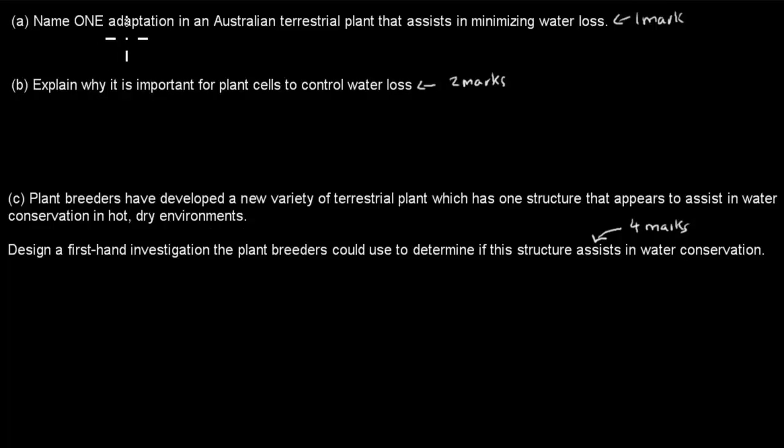So I'll read the question itself first. Part A: name one adaptation in an Australian terrestrial plant that assists in minimizing water loss. That's worth one mark. Part B: explain why it's important for plant cells to control water loss. That's worth two marks.